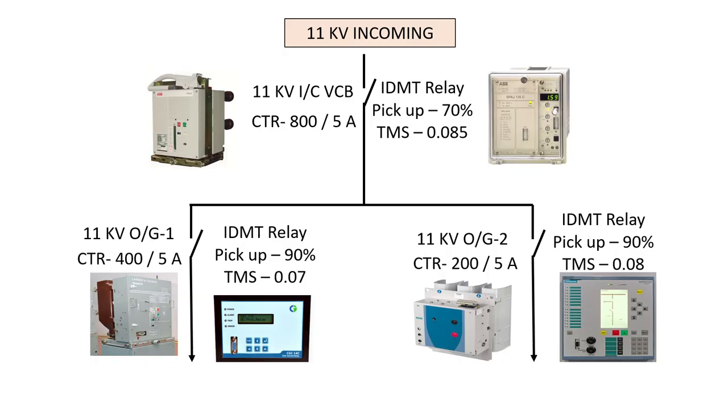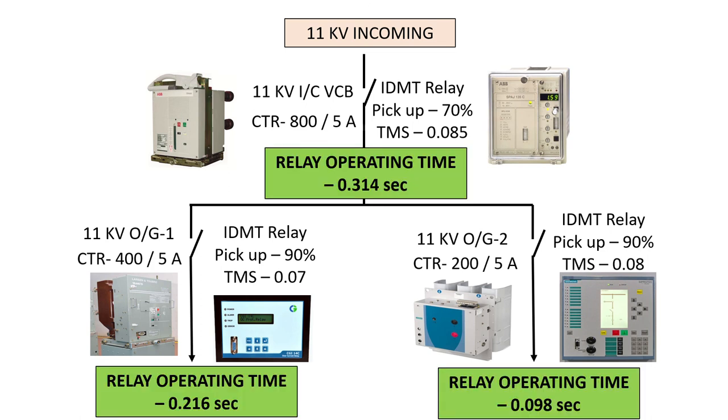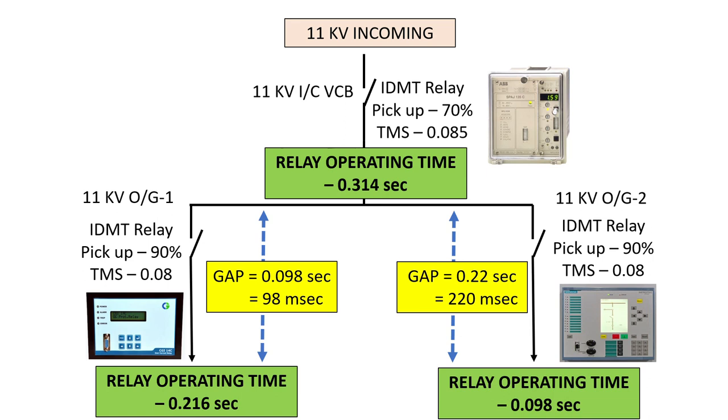Now coordination: we have to ensure that our incoming breaker timing is at least 100 milliseconds more than the outgoing breakers. This 100 ms accounts for relay contact pickup, master trip to actuate breaker coil energizing, and breaker contacts opening. The gap between incoming G-1 is 0.098 seconds or 98 milliseconds, and with G-2 is 220 milliseconds - both are acceptable.